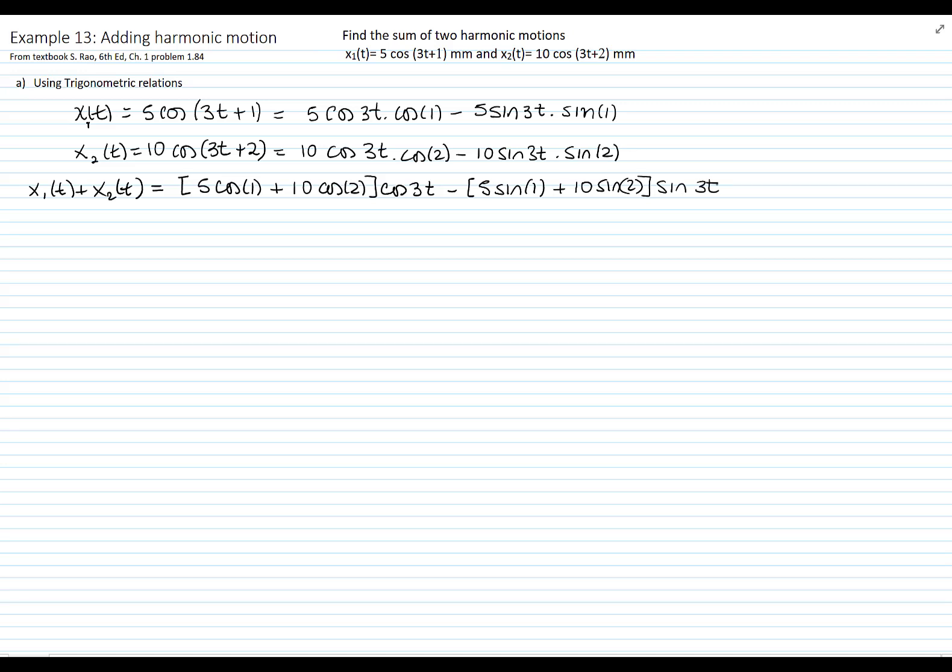So the values in the brackets, we can calculate them. This is x(t). If you multiply 5 cosine of 1 plus 10 cosine of 2, it gives you negative 1.46 cosine of 3t. And if you multiply 5 times sine of 1 plus 10 sine of 2, that gives you 13.30 sine of 3t. Remember that 1 and 2 are in radians.